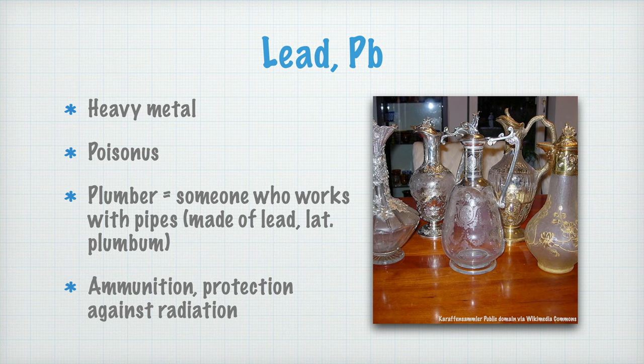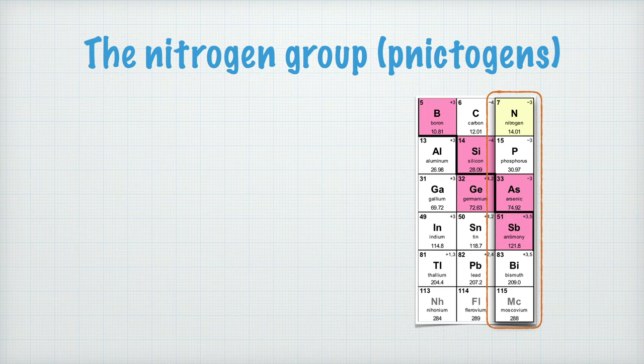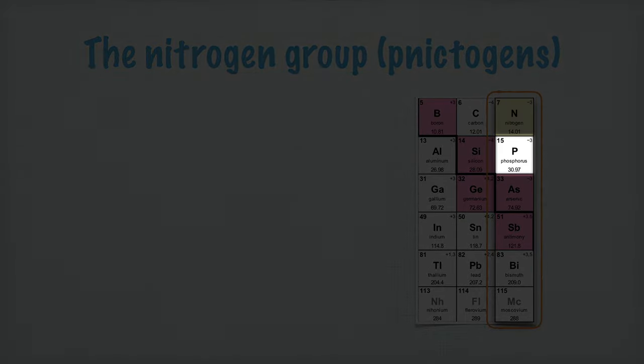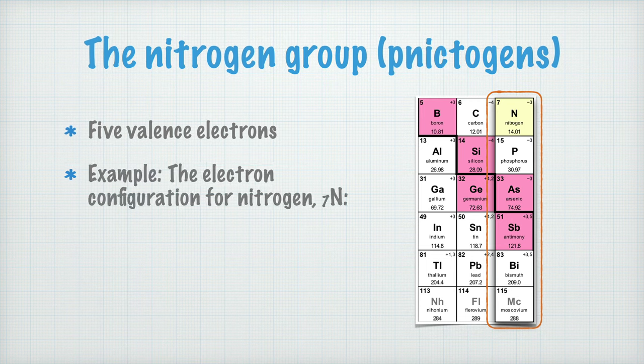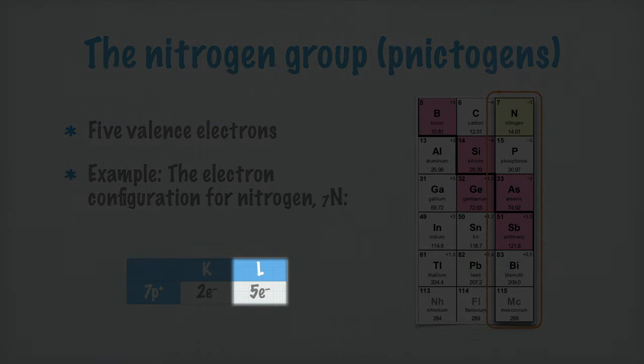Now, for the last of the groups in this video, the nitrogen group, or the pnictogens, as they're also called. In this group, it's also evident that the metal character increases as we move downwards in the group. From nitrogen here, which is a gas, to phosphorus, which is a solid non-metal at room temperature, to arsenic and antimony, which are metalloids, and then finally bismuth and moscovium, which are metals. The nitrogen group is number 15, and in this group, the elements have 5 valence electrons. If we study the electron configuration for nitrogen, we can see what that looks like. We have 7 protons in the nucleus, which means we have 7 electrons to distribute as well. 2 in the K-shell, and 5 in the L-shell.